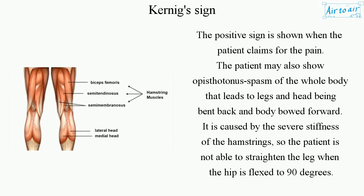The patient may also show opisthotonus — spasm of the whole body that leads to legs and head being bent back and body bowed forward. It is caused by the severe stiffness of the hamstrings, so the patient is not able to straighten the leg when the hip is flexed to 90 degrees.